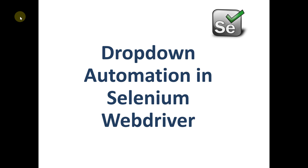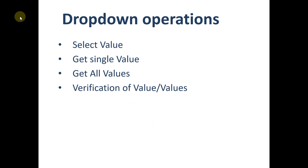Hello friends, welcome to QA Automation World. In this video we are going to see how we can perform different operations on a dropdown with Selenium. We can perform select value operation to select a particular value from the dropdown, get the single selected value, get all values present in the dropdown, and do verification for one value or multiple values.